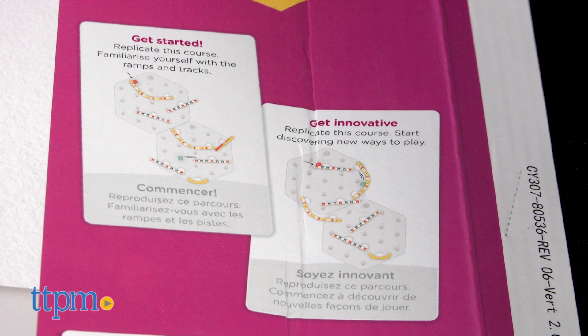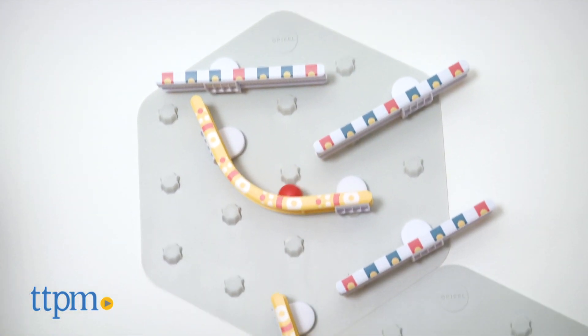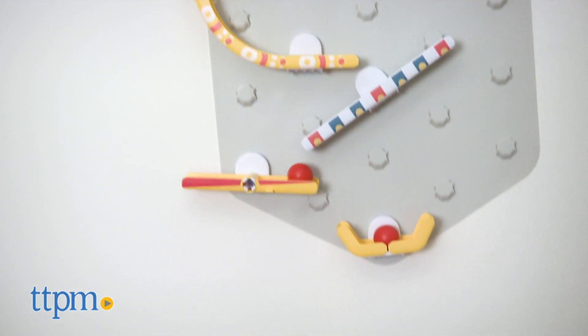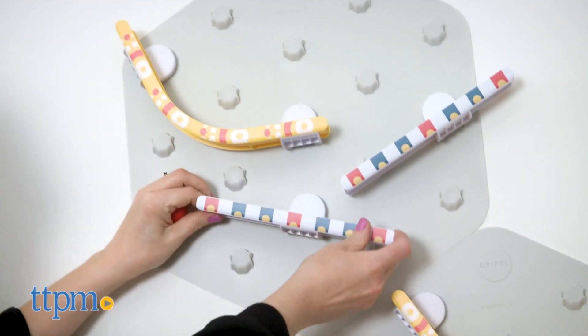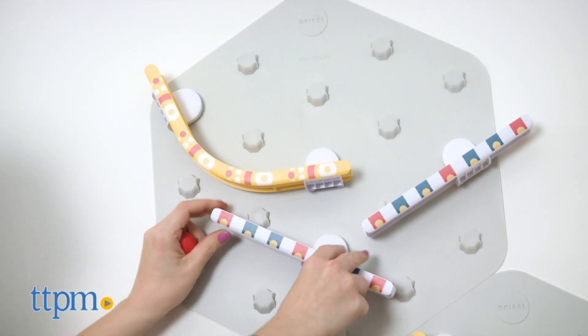On the box, you'll find suggestions for what to build and challenges to get you started. More challenges can be found online at the Oribell website. But this is really about letting kids ages 5 and up use their imaginations and work those problem-solving skills to build whatever marble run they want.